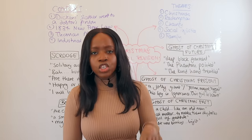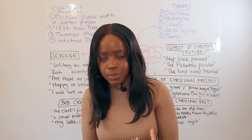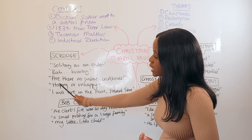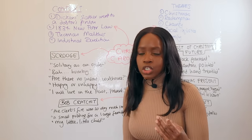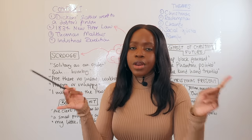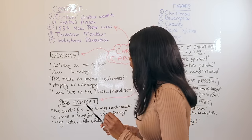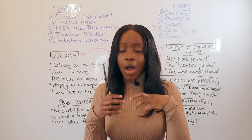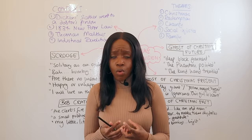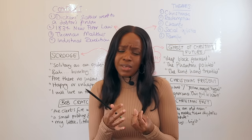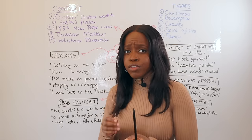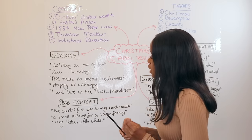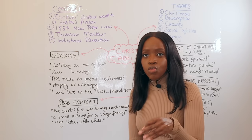The third Scrooge quotation directly alludes to the New Poor Laws: 'Are there no prisons? ... Are there no workhouses?' — two rhetorical questions. This illustrates how uncharitable and harsh Scrooge initially is towards the poor: quite miserly and greedy, almost seeing the poor as inhuman, good enough only to be thrown into prisons and workhouses, and not deserving of his charity.